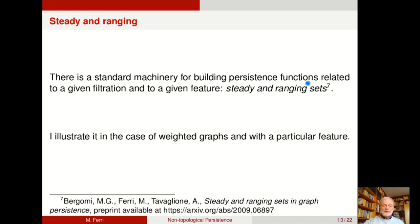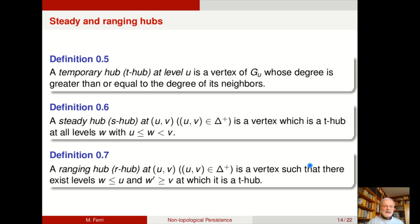Okay, but we have a very general machinery for building persistence functions. This is called steady and ranging sets and can be defined for very many features in a graph, for instance, but not only. But I'll stick just to one: hubs. Generally in a graph, a hub is defined as a vertex whose degree is greater than or equal to the degree of its neighbors. But we use this as a temporary definition in the sense that this vertex is called a temporary hub or T-hub at level u.